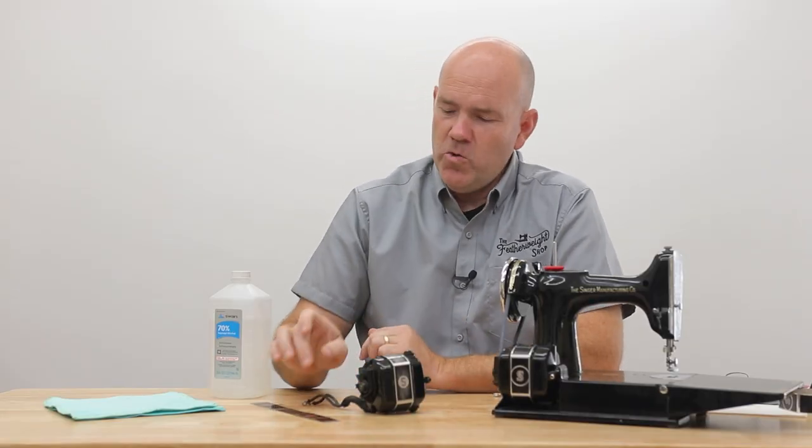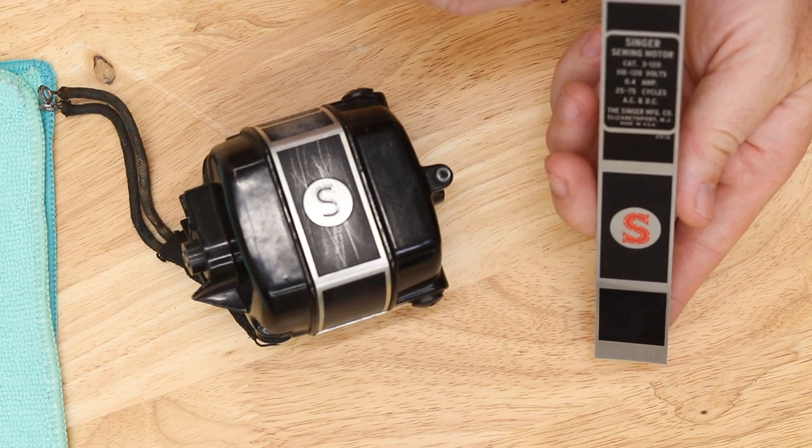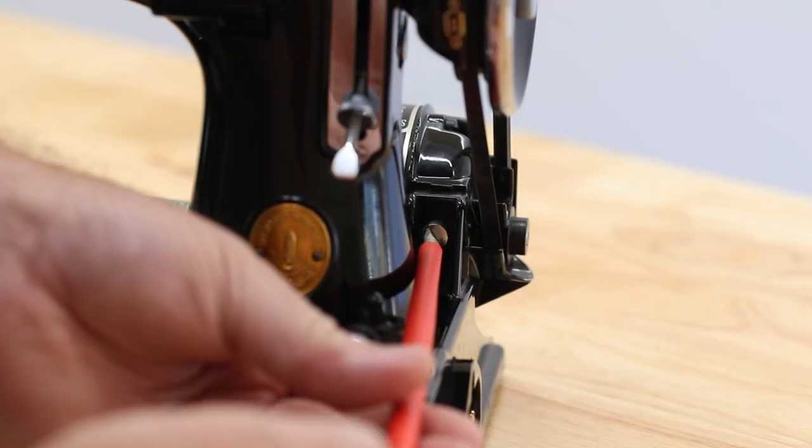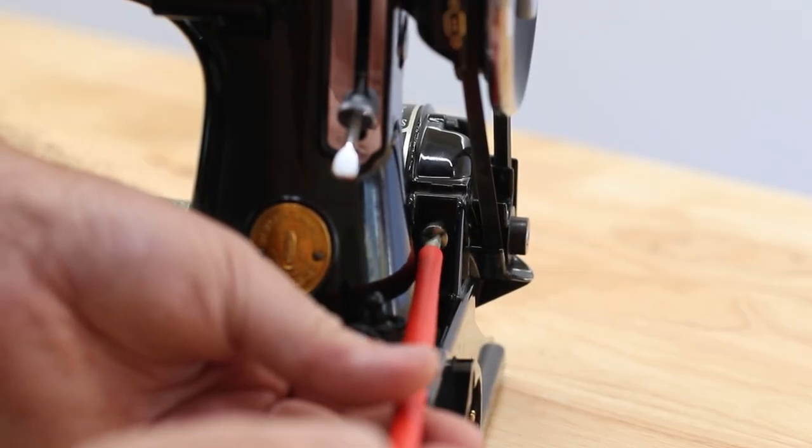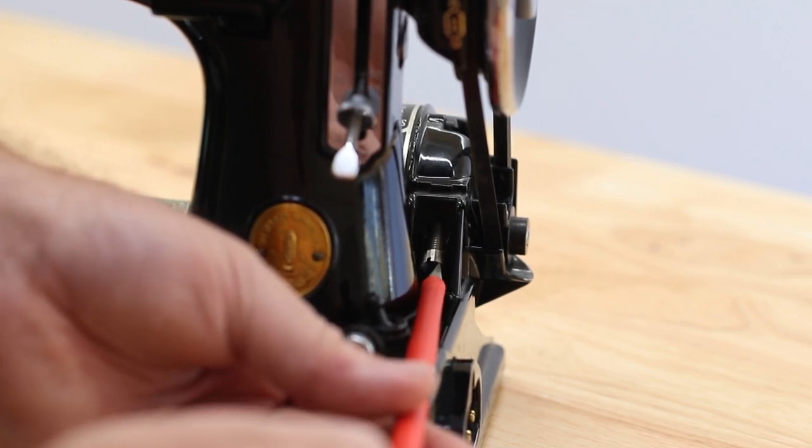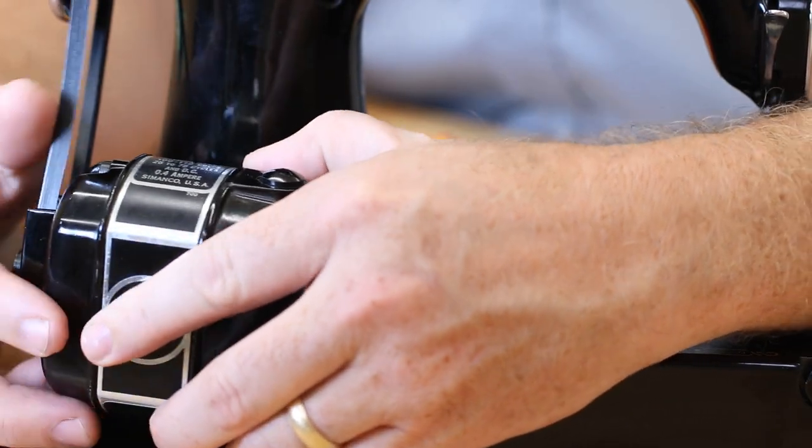We now have a new vinyl motor band overlay that is easily applied even without completely removing the motor from your Featherweight. First, loosen the motor from the machine by removing the motor mount screw using the Vera safety screwdriver. Pull the motor slightly away from the machine, just enough to get the overlay behind it.